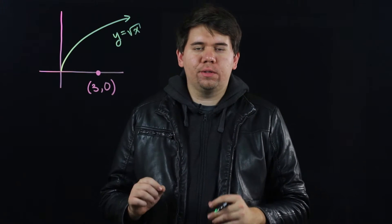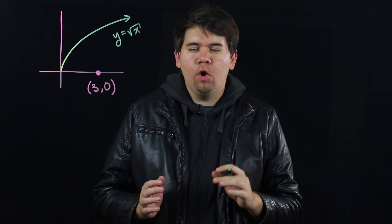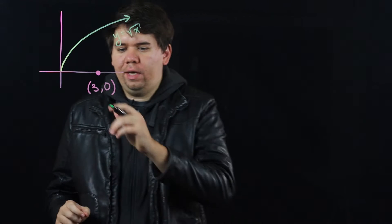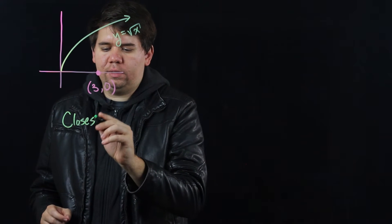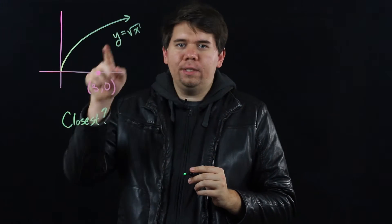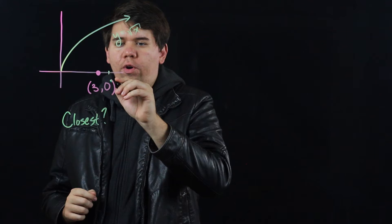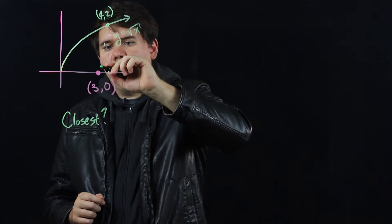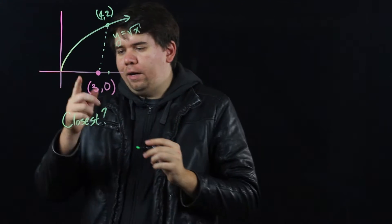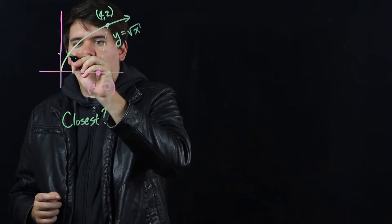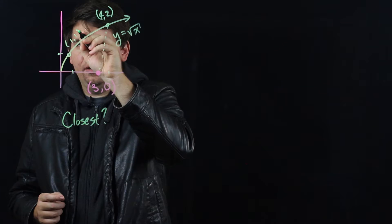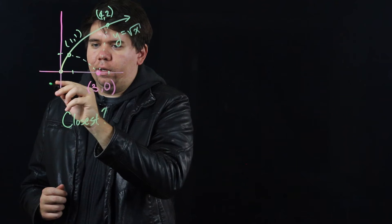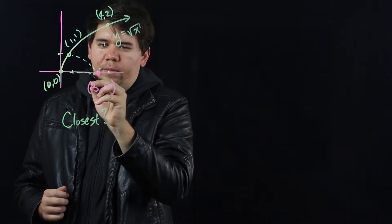Consider the graph of the function y equals the square root of x. What point on this graph is closest to the point (3,0)? You know lots of points on this function. For example, if you go over to 4, you have the point (4,2). And so you might consider how far away is (3,0) from (4,2). Is it closer than, I don't know, you could go over to the point (9,3) for example. How far away is (3,0) from this function? Or you might go to the point (16,4). How far away is (3,0) from the point (16,4)?